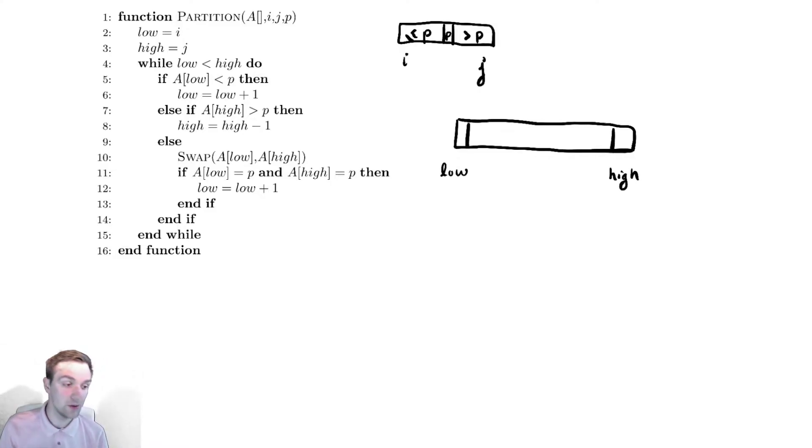What we're going to do is check whether the element at the low position is of the correct type. In the code, we're checking if a[low] is less than p. If that's the case, we know it's in the correct location, so we can move low to the right by one. We increment it by one.